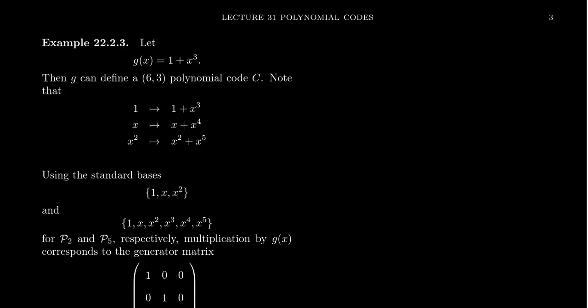Let me give you an example of such a thing. Consider the polynomial g(x), which equals 1 plus x cubed. We're going to show that this polynomial g can be used to create a (6,3) polynomial code.